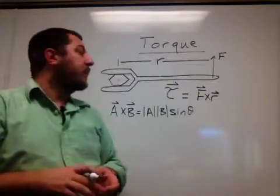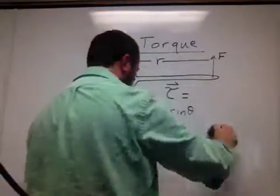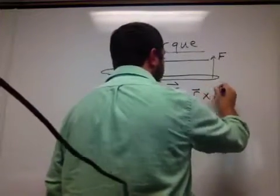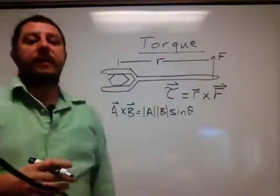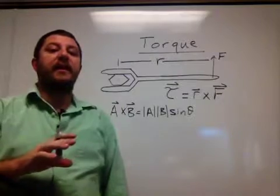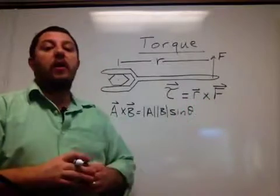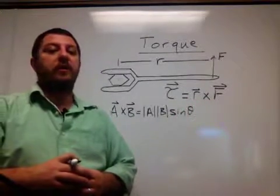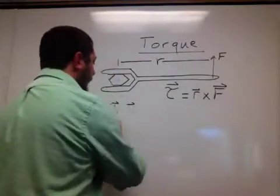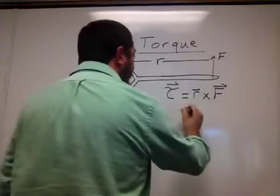Technically, torque is R cross F — not F cross R. When you use the matrix method to find the direction, you plug in R cross F. The magnitude of the torque is given by FR sinθ. If you're only interested in the magnitude, you can use that definition directly.